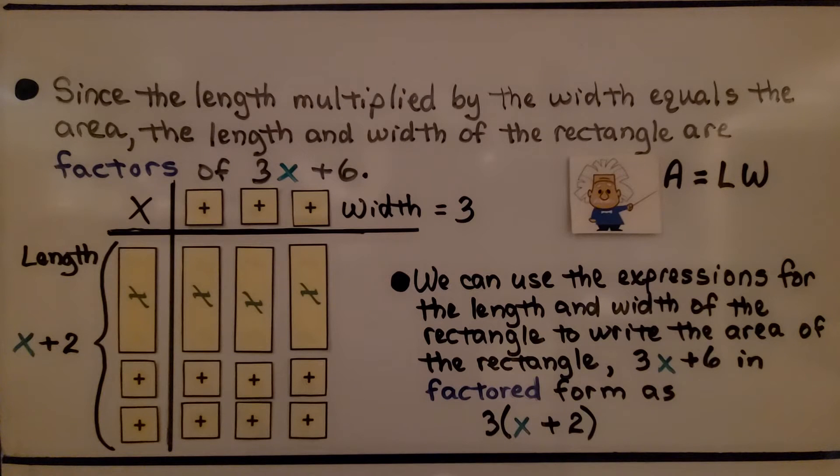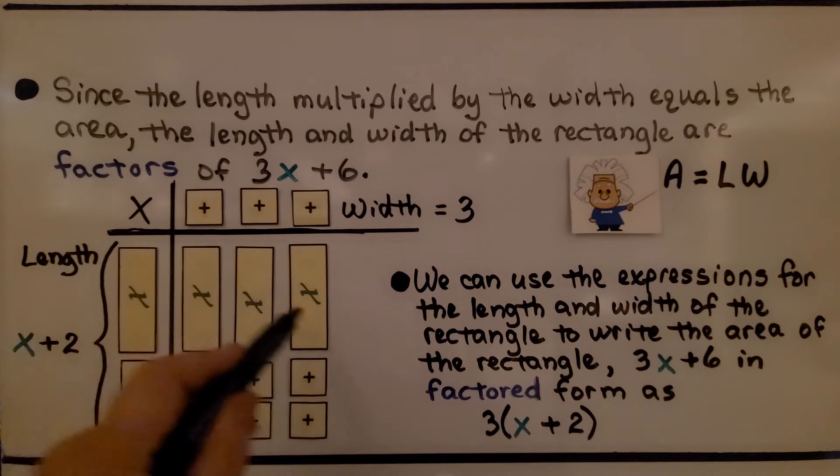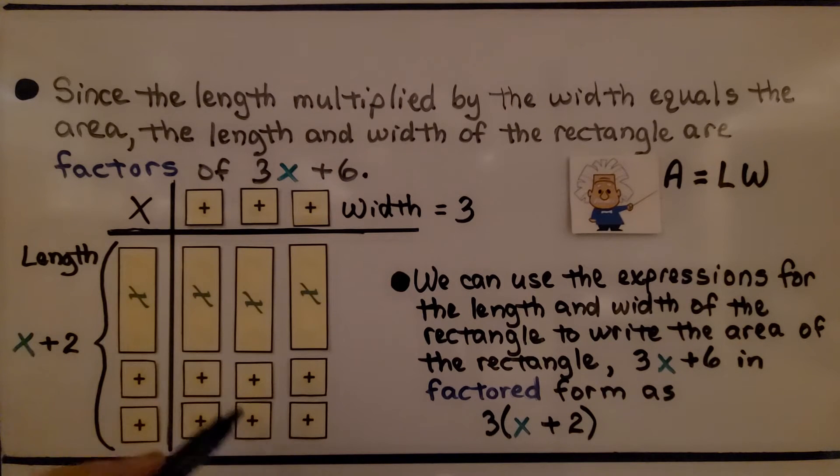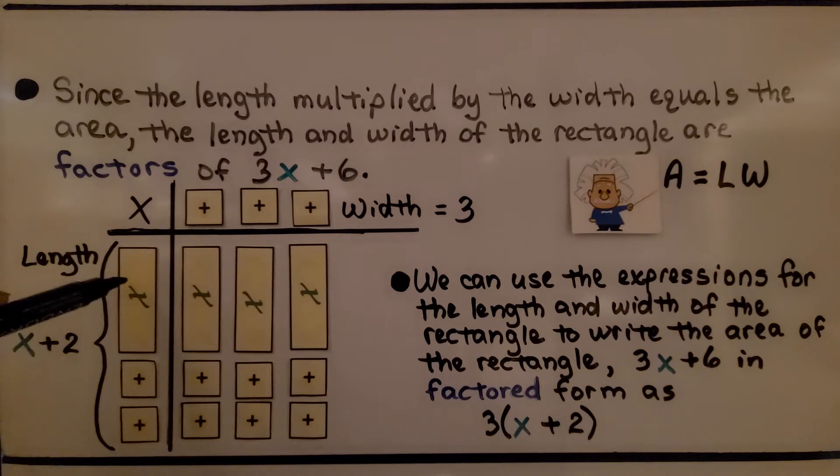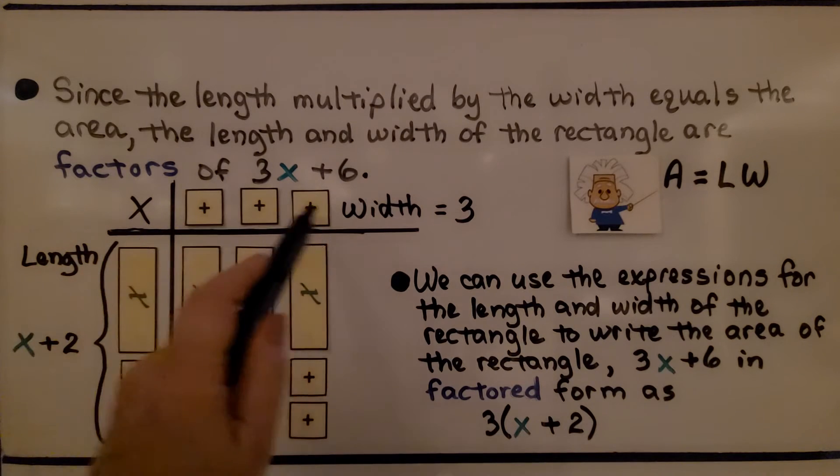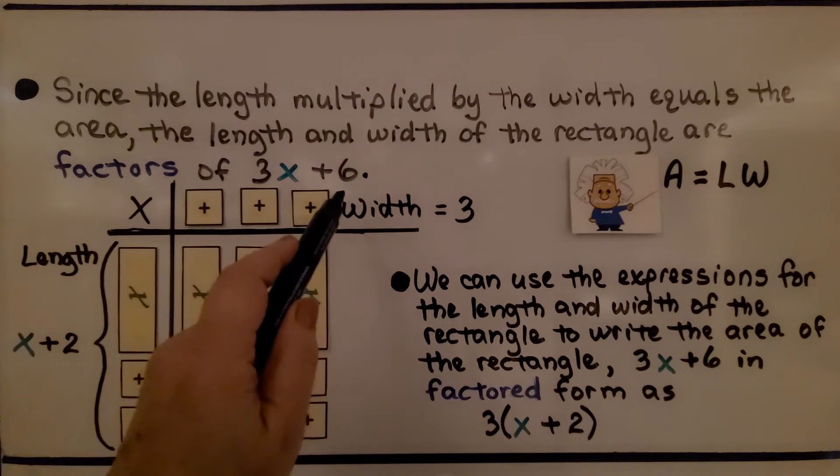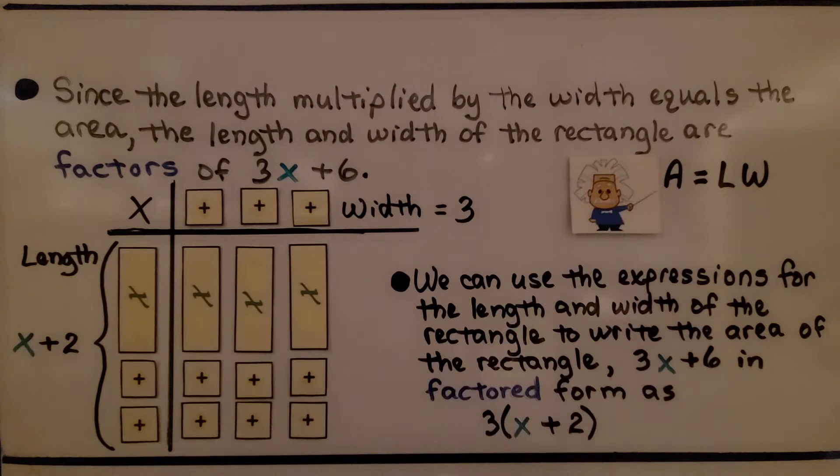Since the length multiplied by the width equals the area for a rectangle, the length and width of the rectangle are factors of 3x plus 6. Here we have our 3x plus 6. We have our length, which is x plus 2, and our width, which is 3. Remember, area equals length times width.